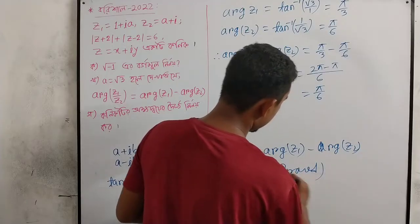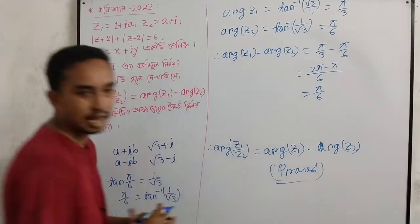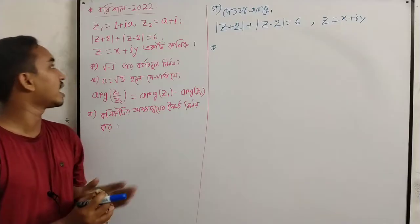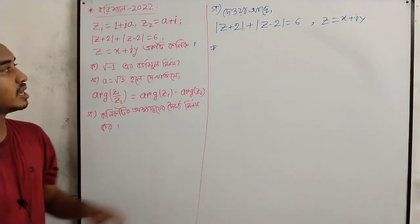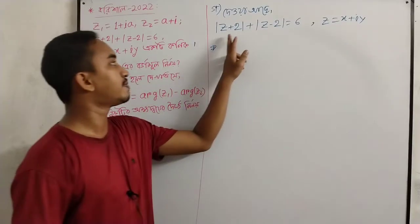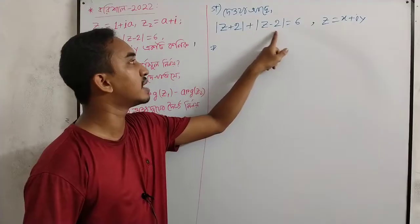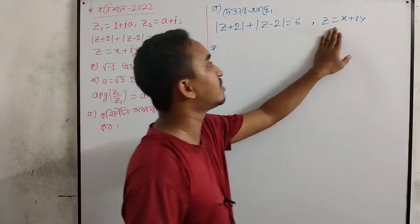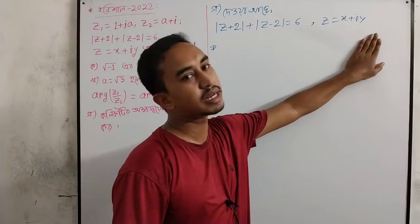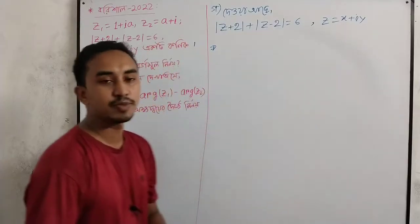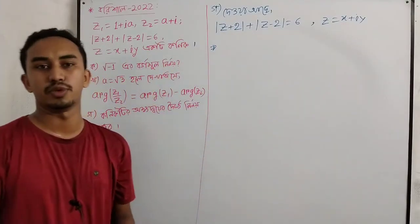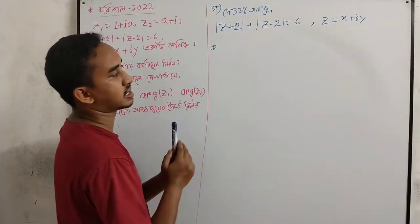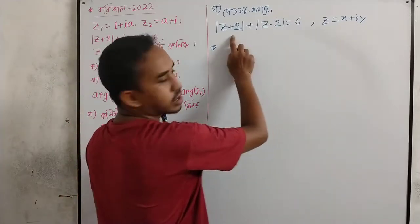We can see x plus y here. The fact is given: which one is Z plus 2 plus Z minus 2 equals 6. This is the same as z equals x plus iy. We can see the next step. At least we have the first step, so the last step has been passed.